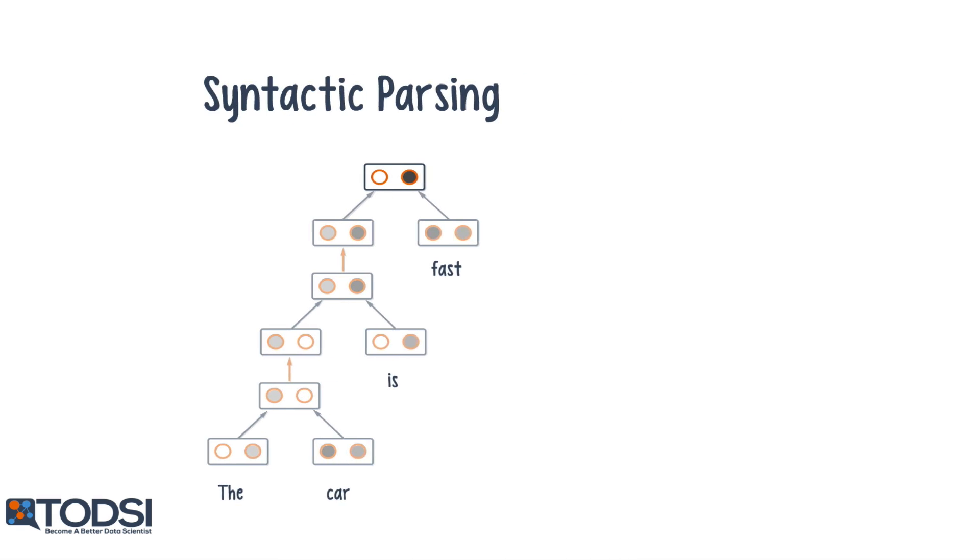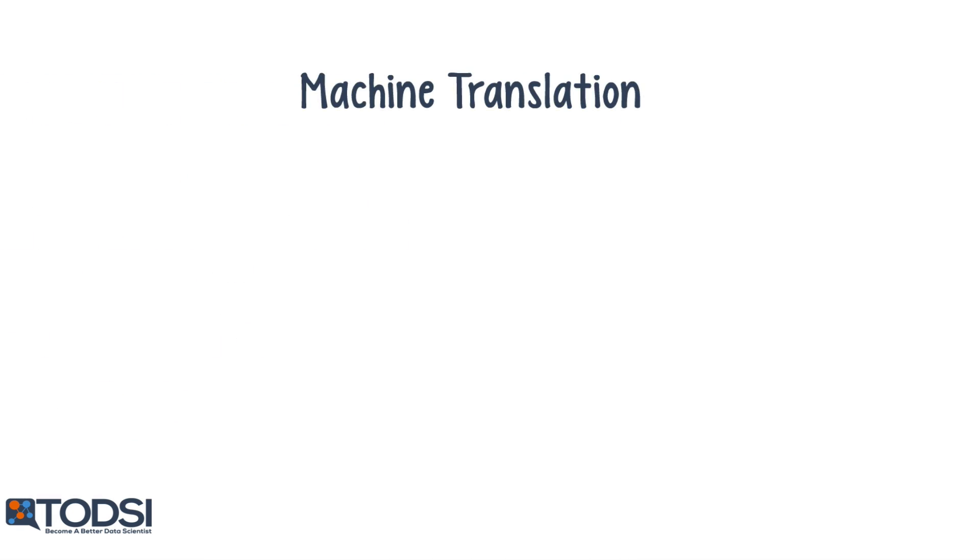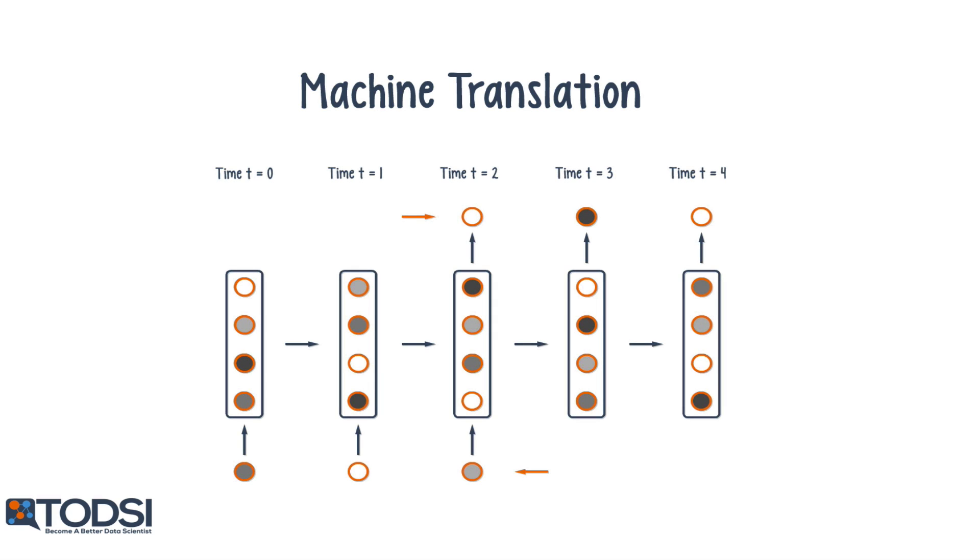Deep nets are also useful for machine translation. As we saw in episode 9, a recurrent net can take in a sequence of inputs along with a time delay, and produce a sequence of outputs. A properly trained recurrent net can learn the inherent syntactic and semantic relationships of multiple different languages.